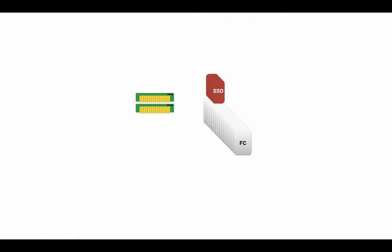There are two primary things that occur: reads and writes in cache. If I have a write page that comes into DRAM, the next thing that happens is it's going to get mirrored — data protected in DRAM — and once that data protection is in place I can acknowledge the host. After that I can continue to optimize that write page and move it into the FC drives once it's ready.